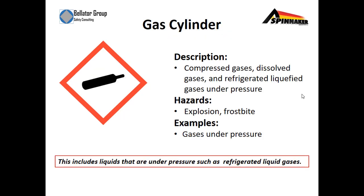The next is a gas cylinder. Description: compressed gases, dissolved gases, and refrigerant liquefied gases under pressure. The hazard is explosion and frostbite, and examples include gases under pressure — including liquids under pressure such as refrigerant liquids and gases.